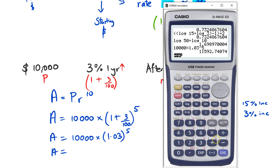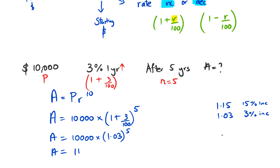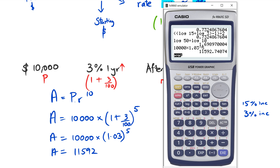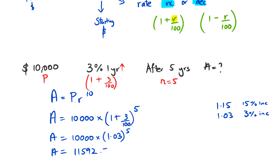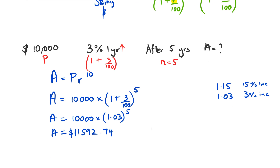That gives us $11,592.74. Obviously we're not actually using any logs here, but this is the final value after five years.